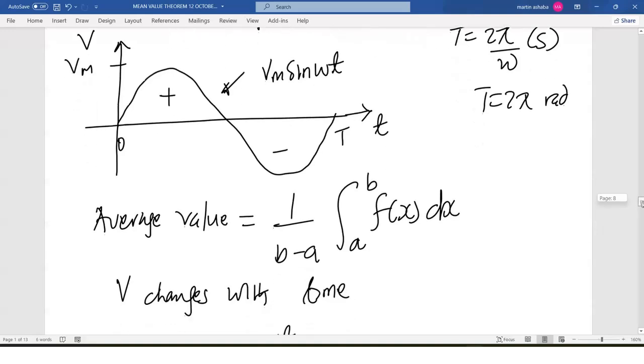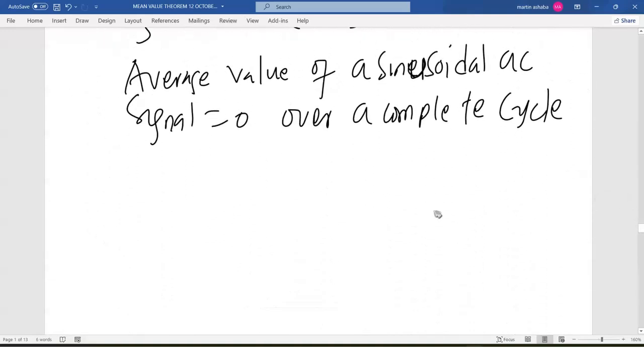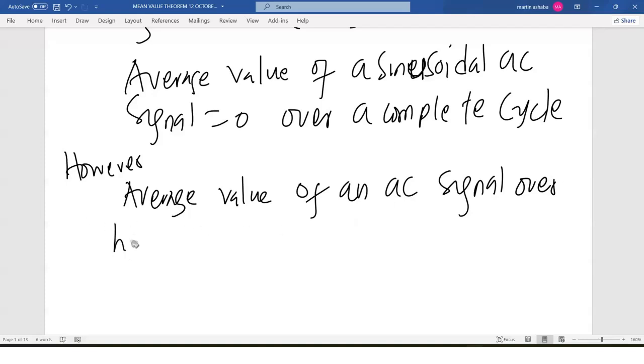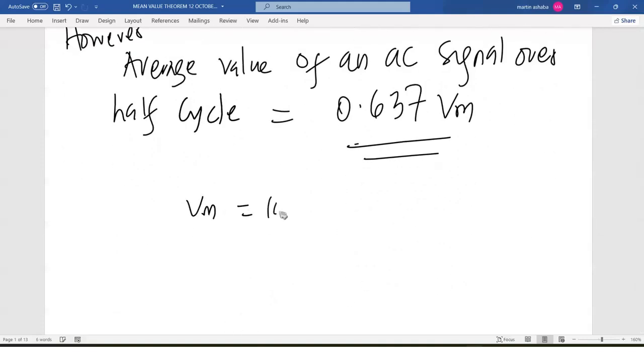However, average value of an AC signal over half cycle is equal to 0.637 times the peak value. If your peak value Vm is equal to 10 volts, then the V_average will be 10 times 0.637, and this gives you 6.37 volts. So in the next lecture, we are going to see how we can get that value.